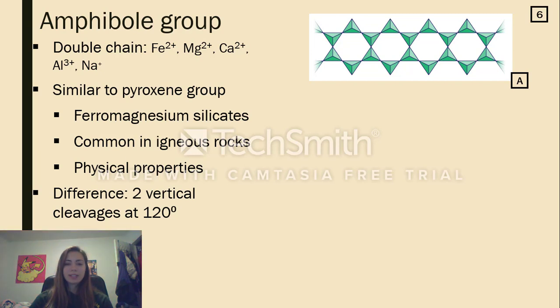Double chain silicates belong to the amphibole group. They are very similar to the pyroxene group, where they both bind to iron, magnesium, and calcium. They both commonly form igneous rocks and they even look similar in appearance. But the amphibole's double chain structure allows two more types of cations to bind to the tetrahedrons, aluminum and sodium.